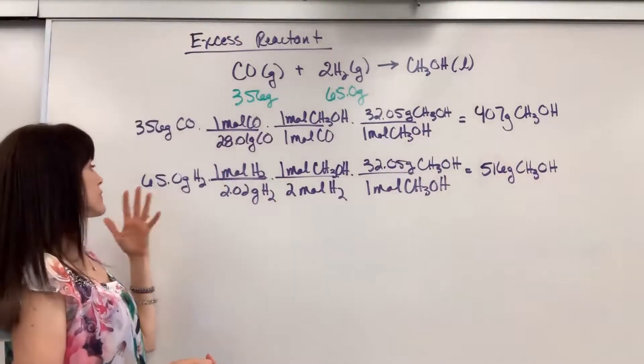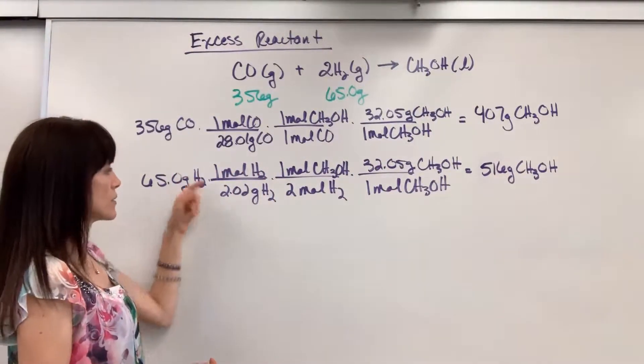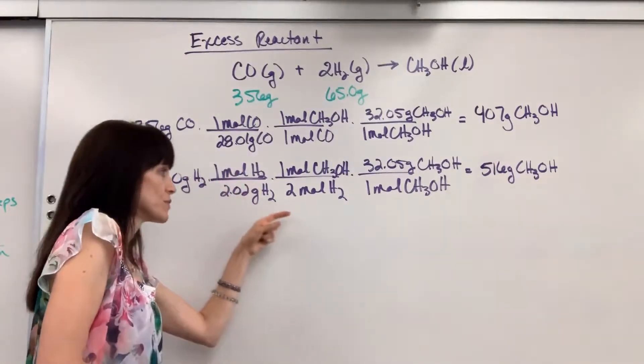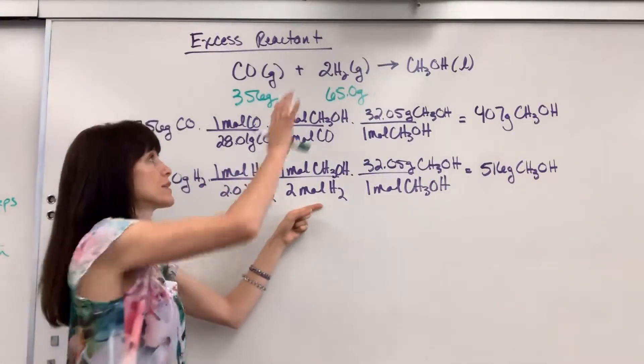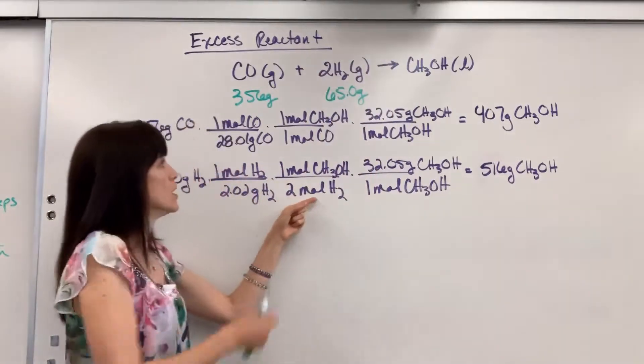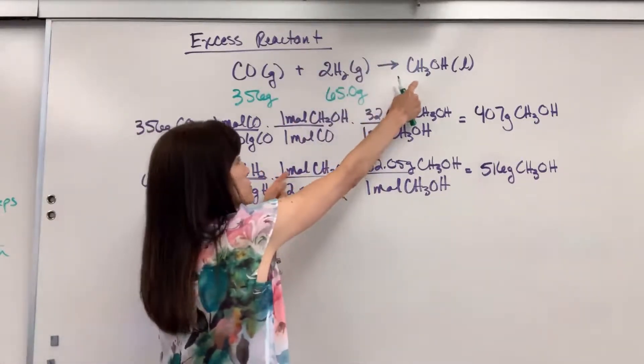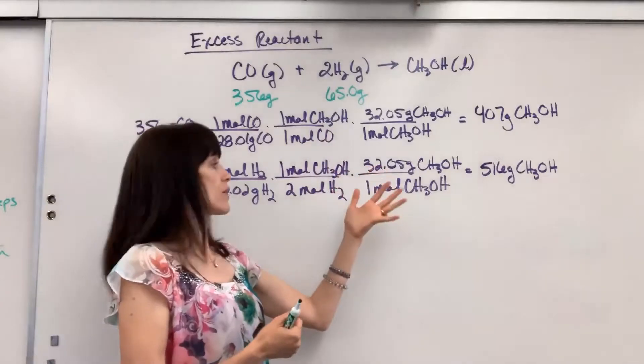So let's look at the hydrogen. We've got the 65 grams of hydrogen. I'm going to use molar mass, bring that to moles because I have to use the molar ratio, walk the bridge from one compound to another. Two moles of hydrogen produce one mole of methanol.